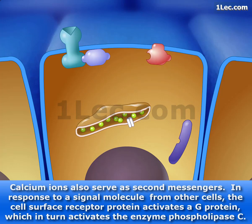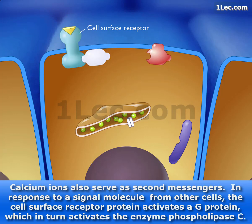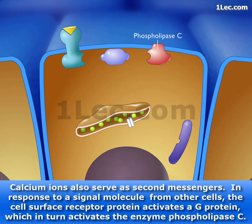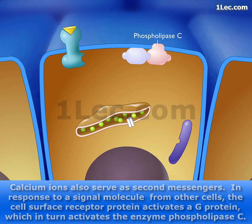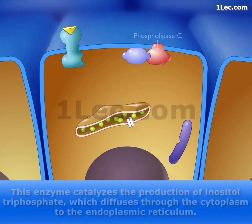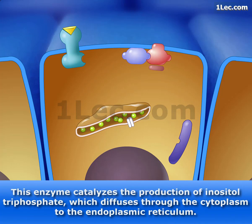Calcium ions also serve as second messengers. In response to a signal molecule from other cells, the cell surface receptor protein activates a G-protein, which in turn activates the enzyme phospholipase C. This enzyme catalyzes the production of inositol triphosphate.